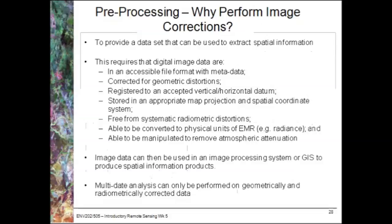The most important thing here is that we need to provide a data set that can be used to extract spatial information. We require digital image data that are first of all in an accessible file format with relevant and accurate metadata, that have been corrected for all geometric distortions and registered to an accepted vertical and horizontal datum, with an appropriate map projection considering whether we want to preserve areas, distances or shapes, and a spatial coordinate system. These things allow us to integrate them with other spatial data sets in a GIS.